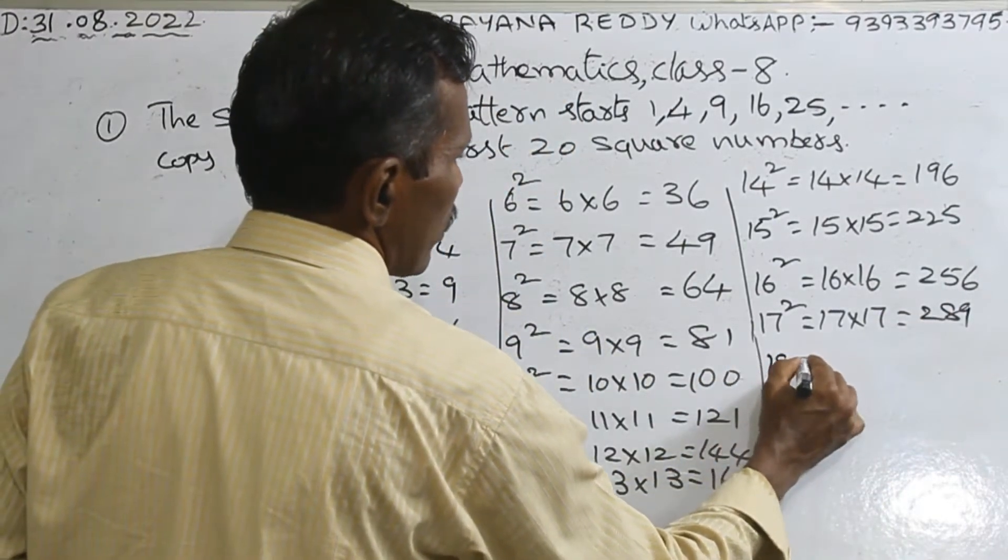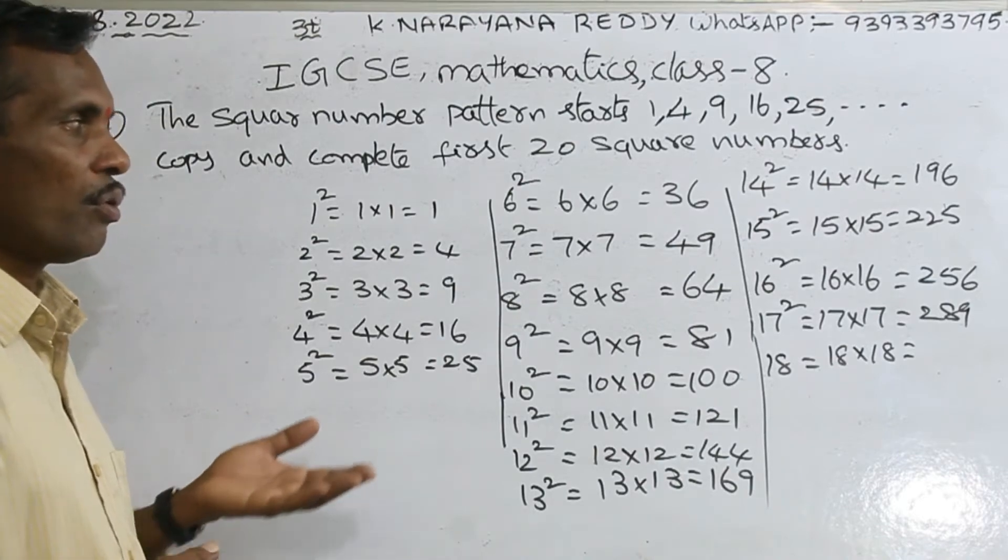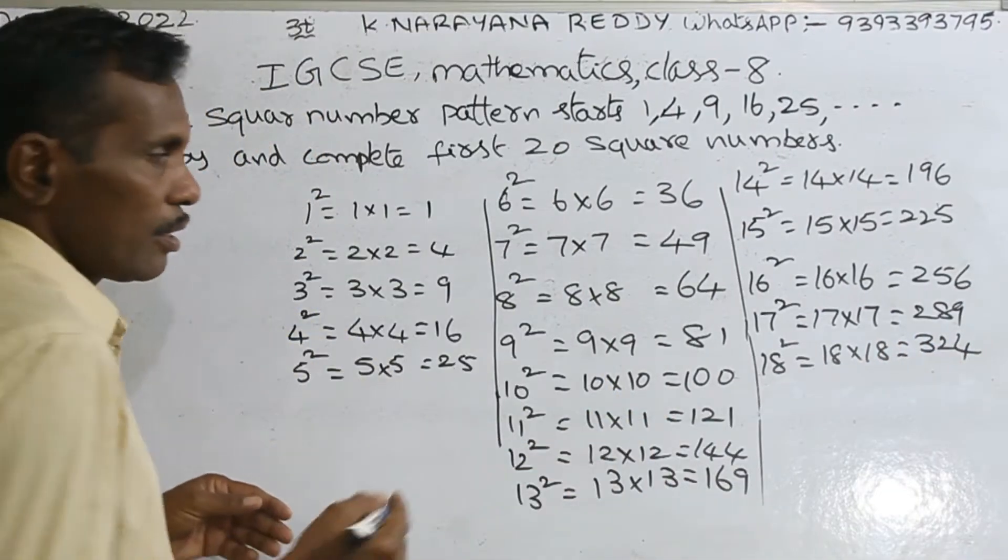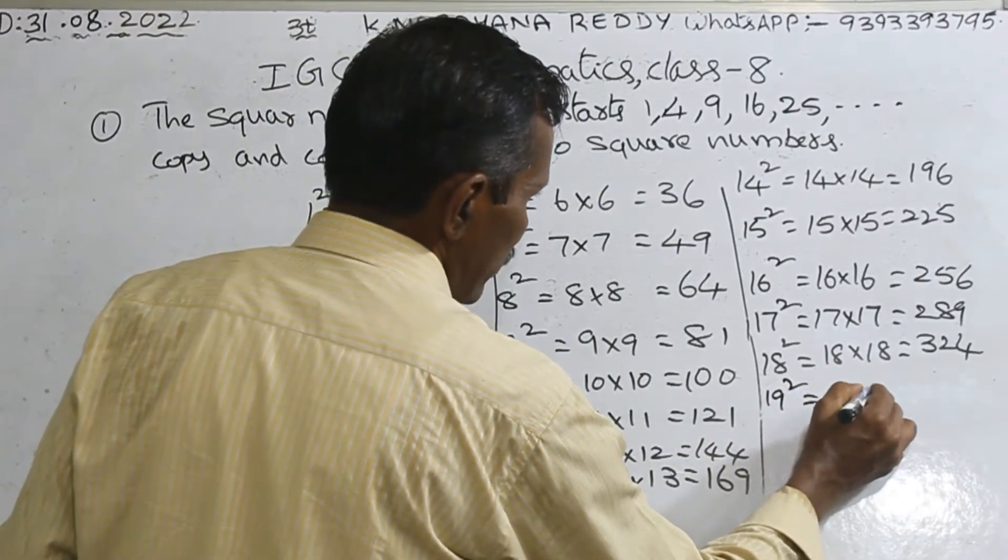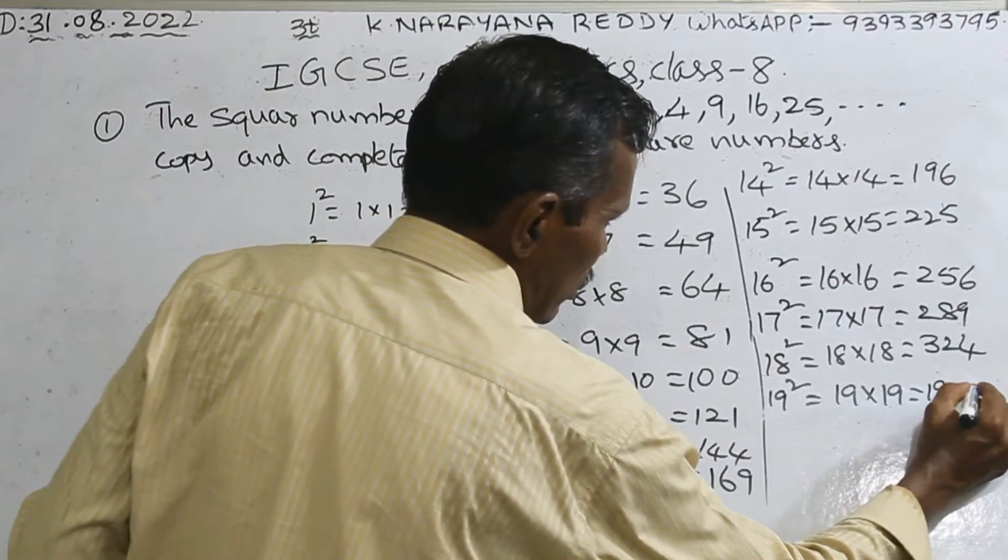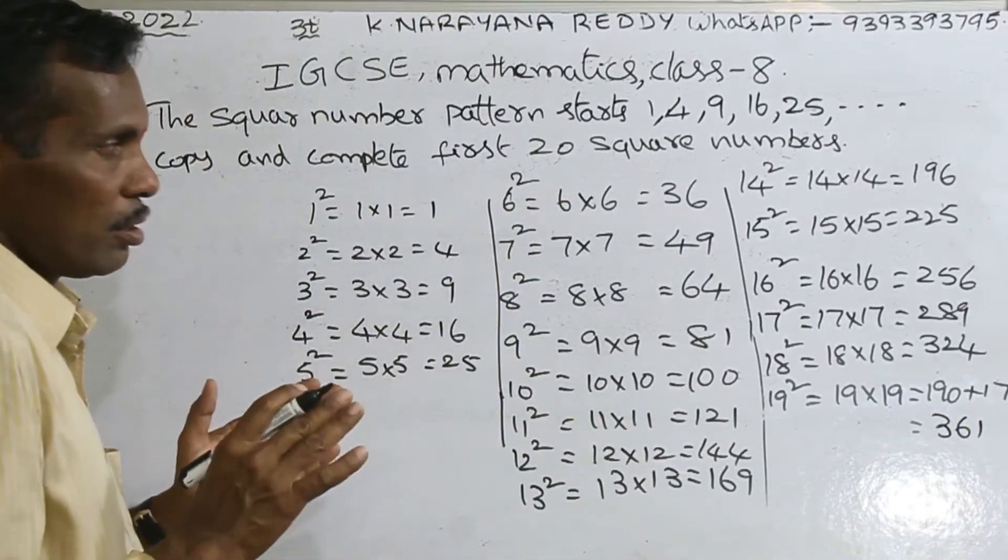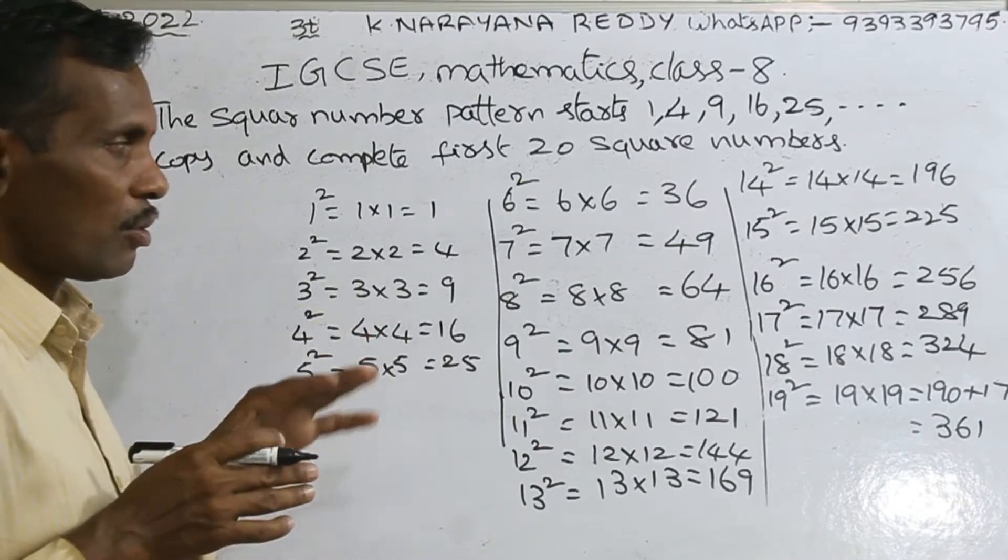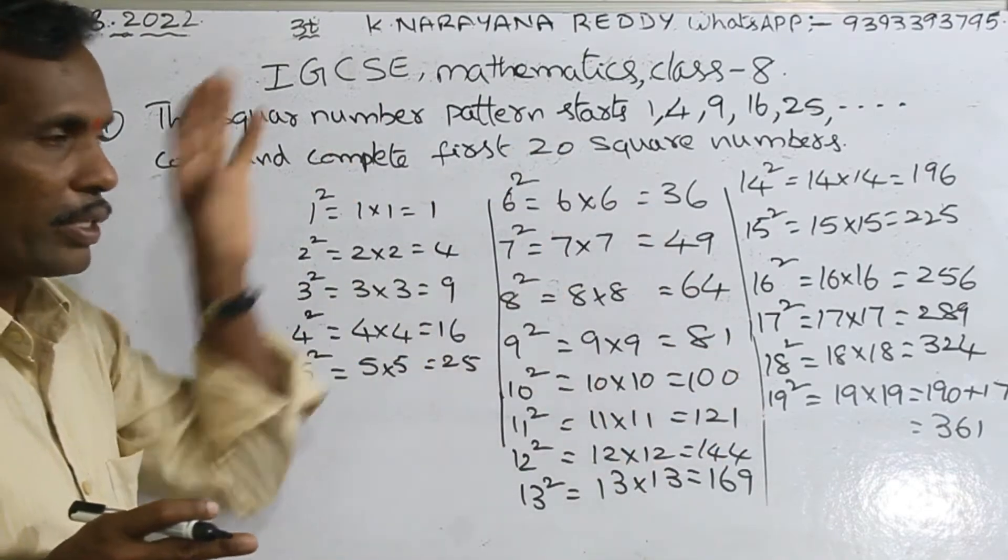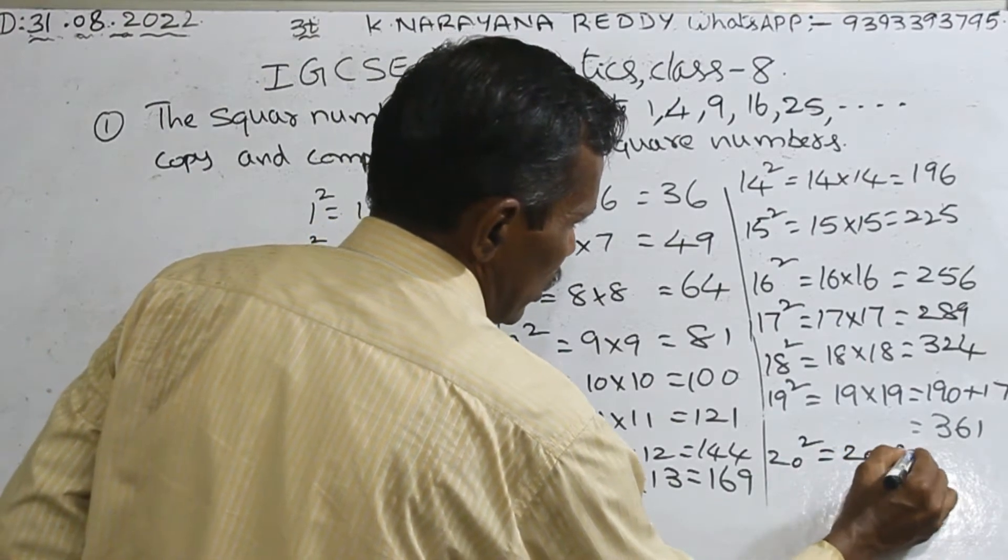Same manner, 18 square: 18 into 18. 18 threes are 180, 18 eights are 144, so 144 plus 180 equals 324. 19 square: 19 into 19. 19 threes are 190, 19 nines are 171, how much? 361. 20 square you know, this is very easy, 400.